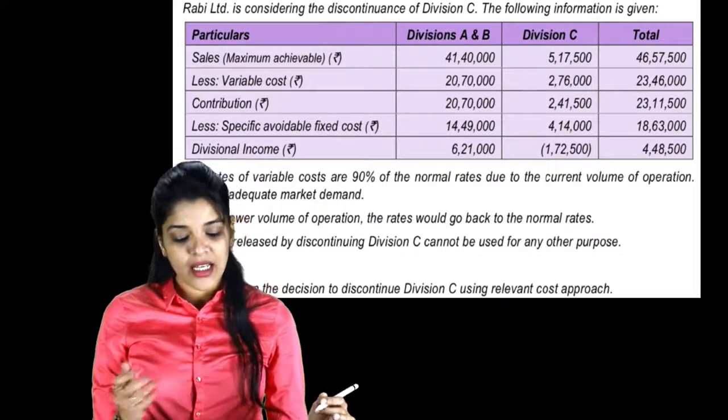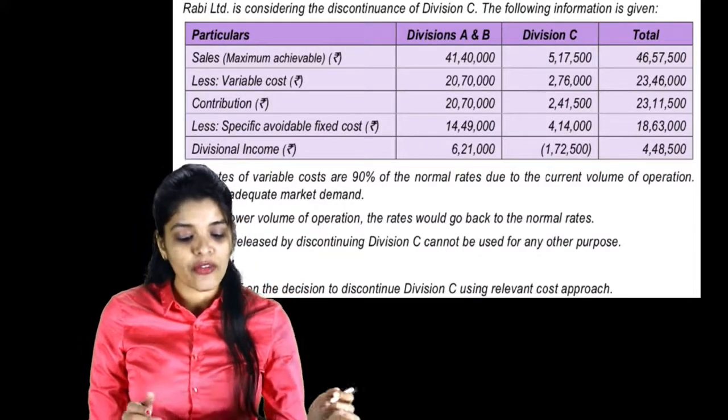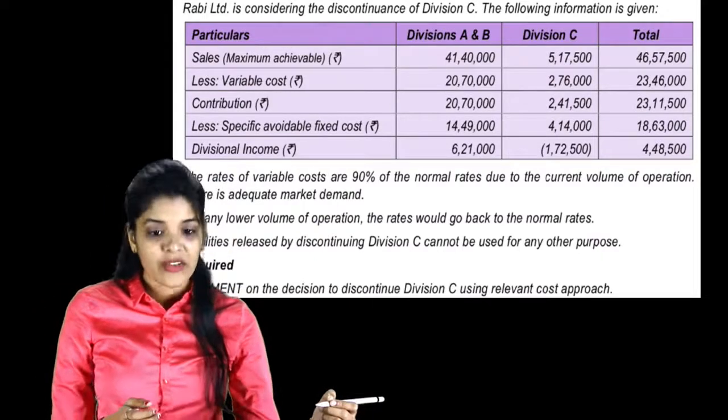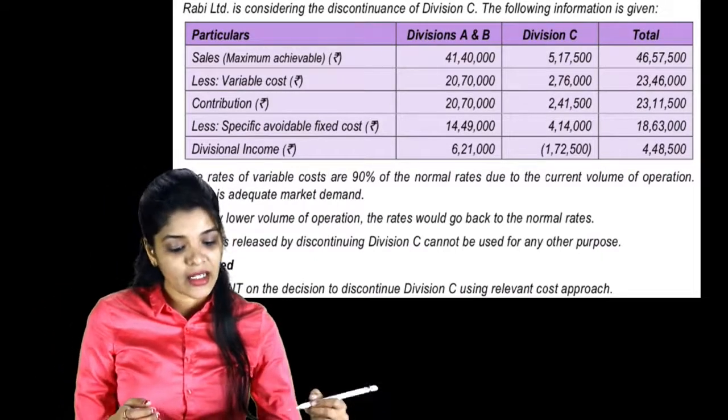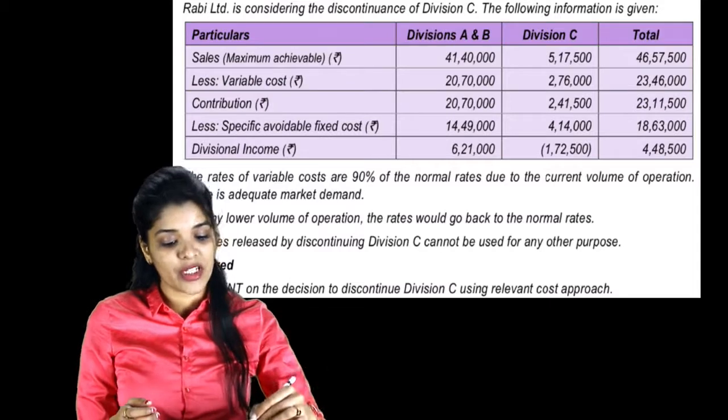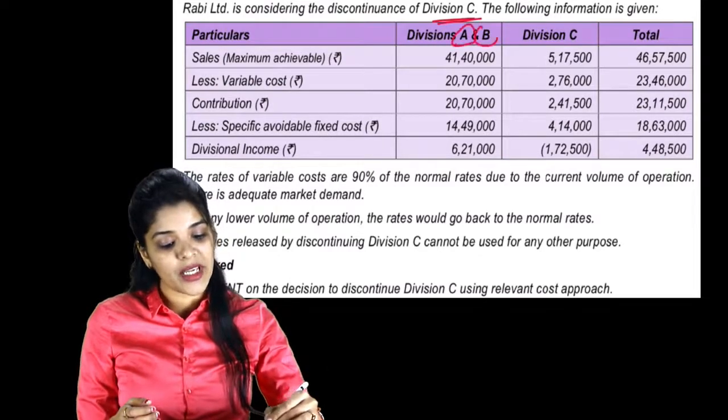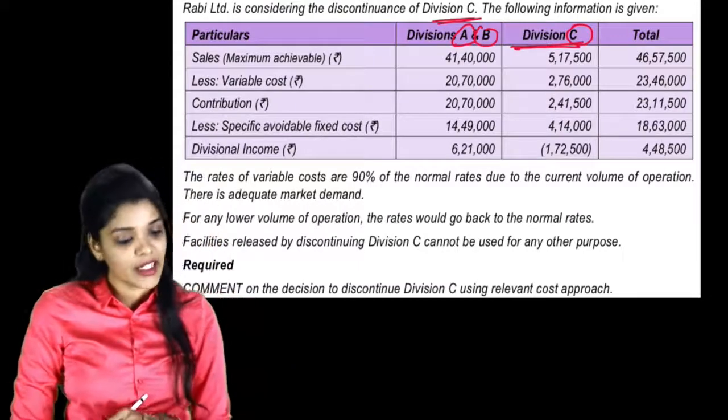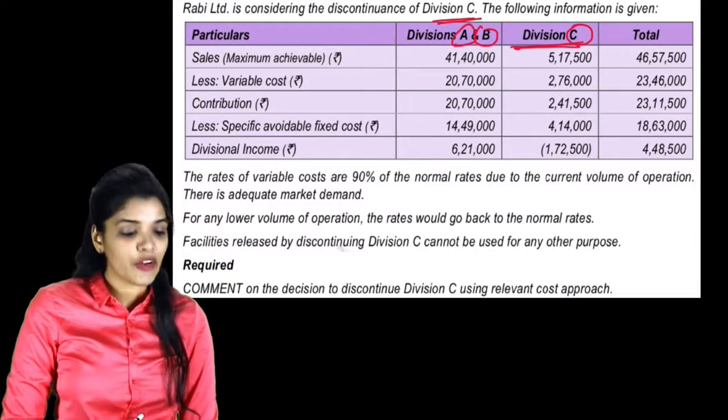Rabi Limited is considering the discontinuance of Division C. The following information is given. Rabi Limited should discontinue Division C, the following information is given.